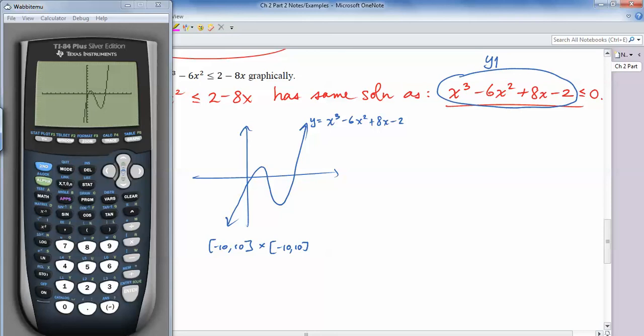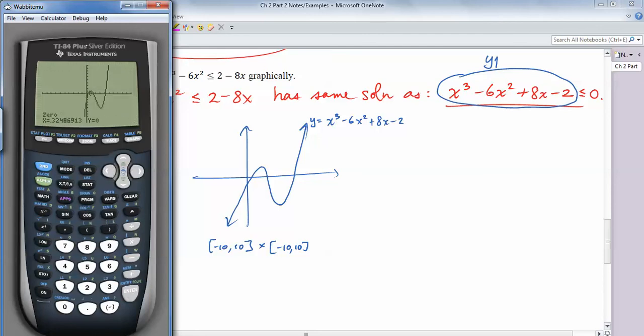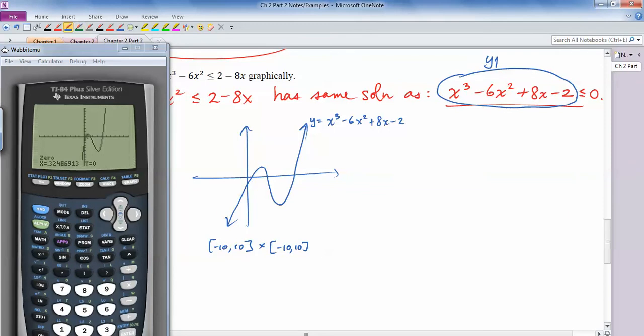And I need to know when that's less than 0. So what I could do is find the zeros. So if I go second calc 0, that's definitely on the left of that one zero right here. So I'm going to hit enter. And then that's on the right side of my zero. And I'll guess in the middle here. Okay, so this zero, let me use a different color. This zero, oh, that's the same color. This zero, that color's too close, red. That'll show up better. That zero is, we'll round to three decimals. So 0.325.